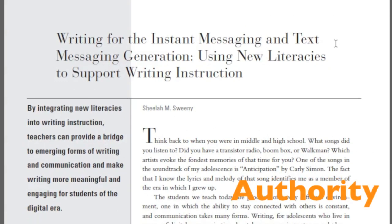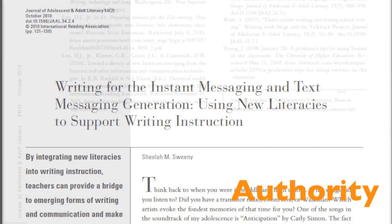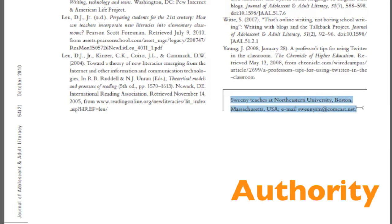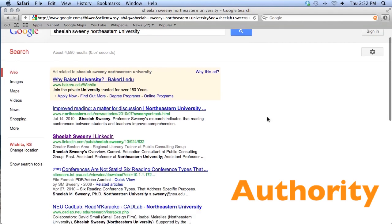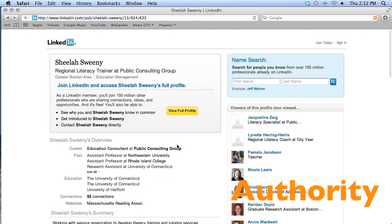Authority is related to the source of the information in the article. One of the biggest indicators of authority is the author. Information about the author is usually listed at the top or at the bottom of the article. For this one, we see that the author teaches at the university. You could easily do a Google search on the author to find out more about their subject expertise.